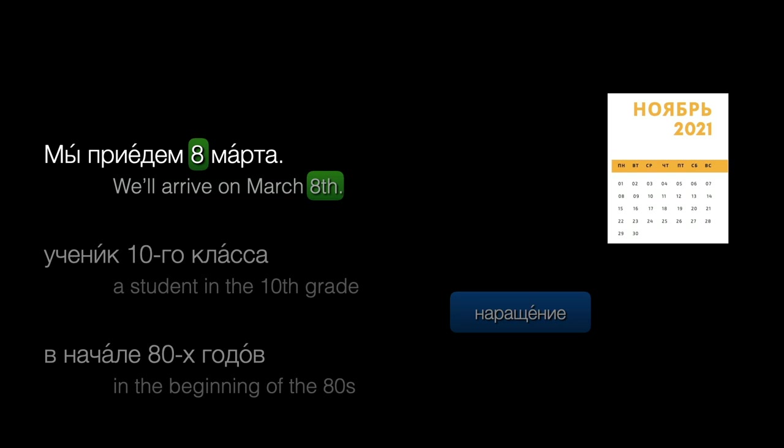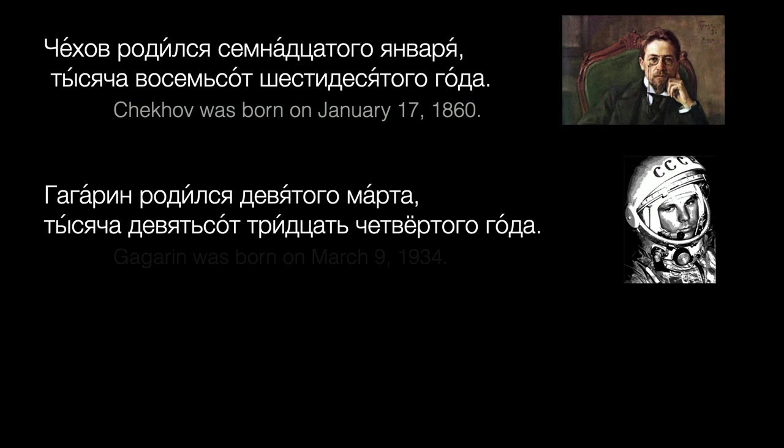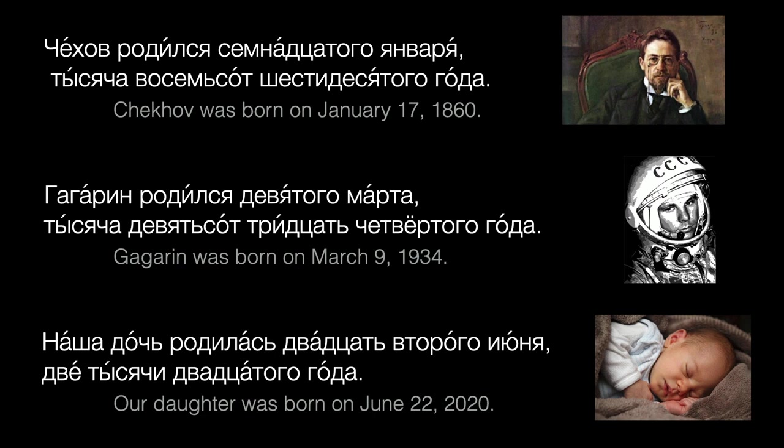What about the year? Чехов родился 17 января 1860 года. Гагарин родился 9 марта 1934 года. Наша дочь родилась 22 июня 2020 года.